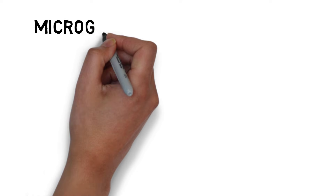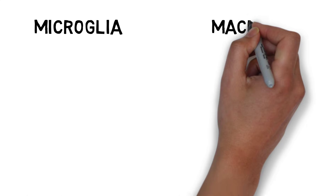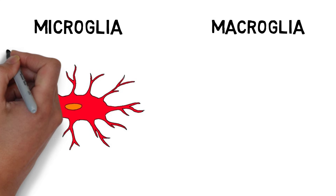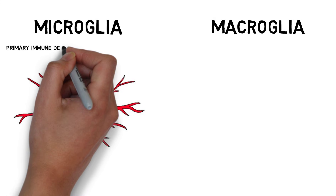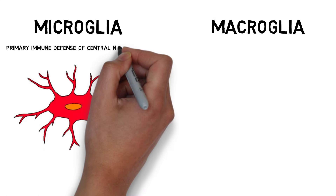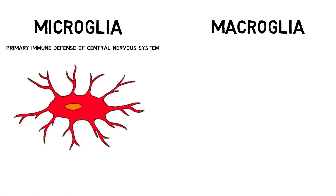Glia can be divided into two classes: microglia and macroglia. Microglia act as the primary immune defense of the central nervous system. They travel throughout the brain and spinal cord and remove things like damaged neurons, pathogens, or other foreign substances.